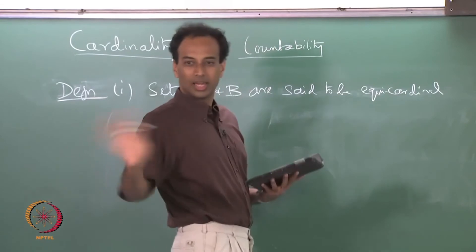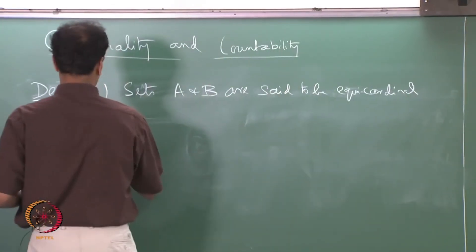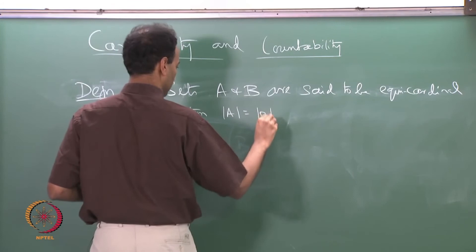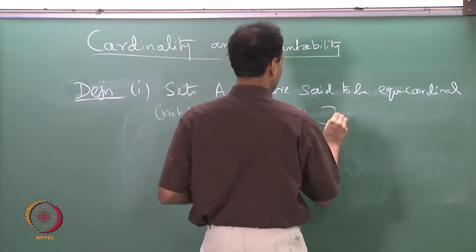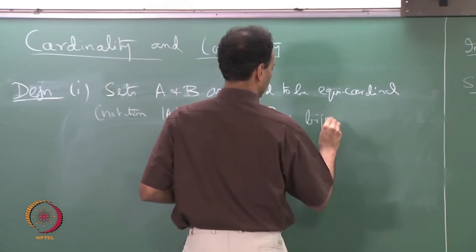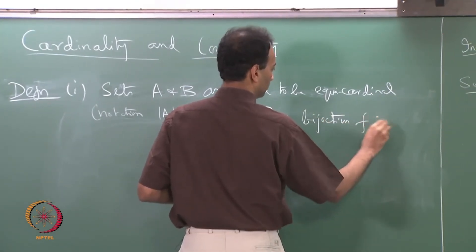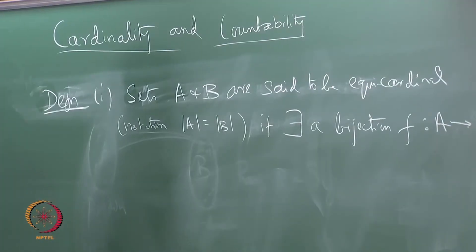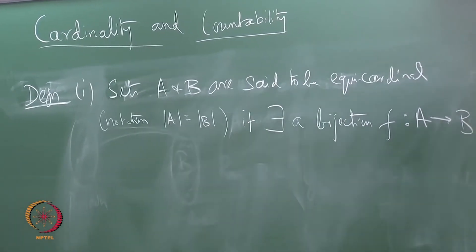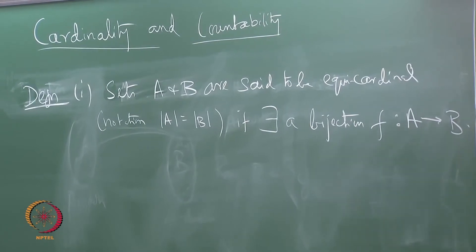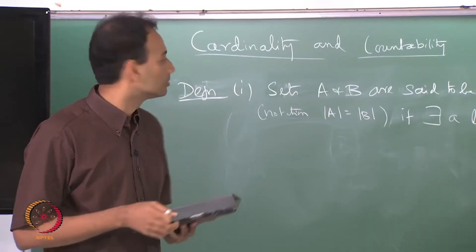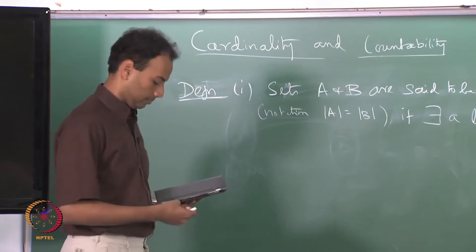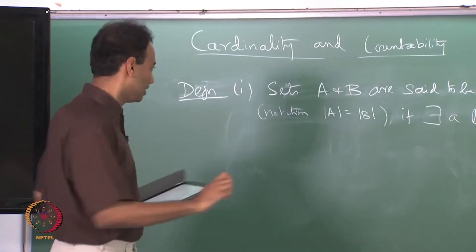Two sets are equicardinal — meaning they have the same cardinality — if there exists a bijection f from A to B. If some bijection exists between A and B, they are said to be equicardinal. This is the definition of the term equicardinal.